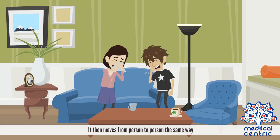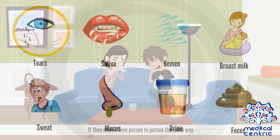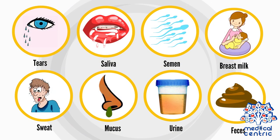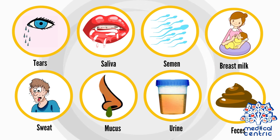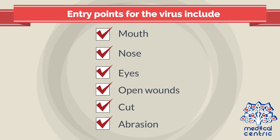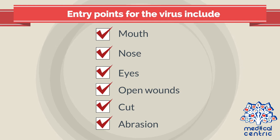It then moves from person to person the same way. Bodily fluids that may contain the virus include tears, saliva, semen, breast milk, sweat, mucus, urine, and feces. Entry points for the virus include the mouth, nose, eyes, open wounds, cuts, and abrasions.